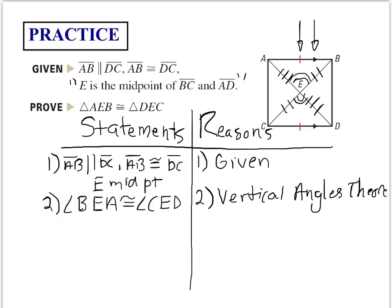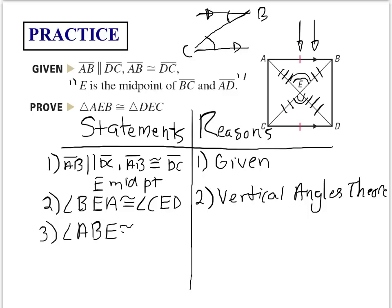So far I have three sides of each triangle congruent and one angle. I need more angles. Since AB is parallel to DC, side BC acts almost like a transversal — similar to our work in Chapter 3 on parallel lines. That tells us angle ABE is congruent to angle DCE.